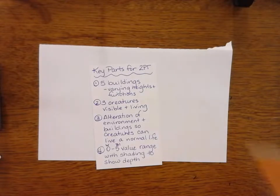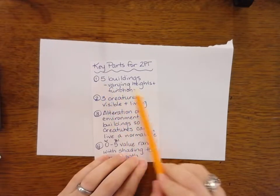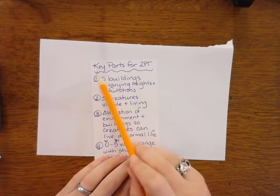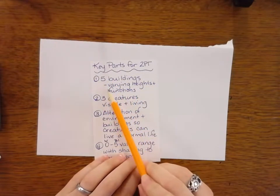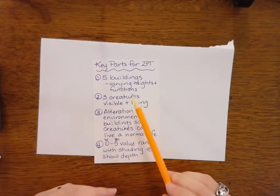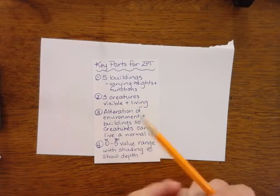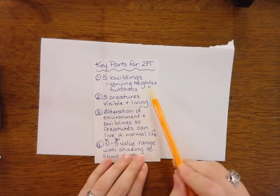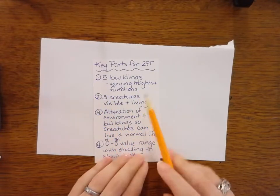Our key points for this two-point project: we have five buildings, so I'll be coming around and double-check to make sure that you have them. They need to be varying heights and functions, so I have a shop, a hotel, an apartment, a home, all these different types of things for these creatures to be able to live in.